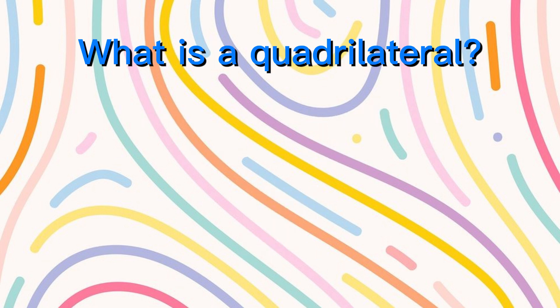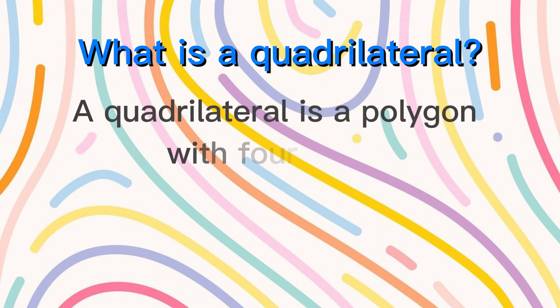What is a quadrilateral? A quadrilateral is a polygon with four sides.